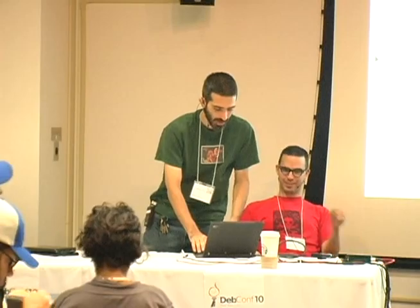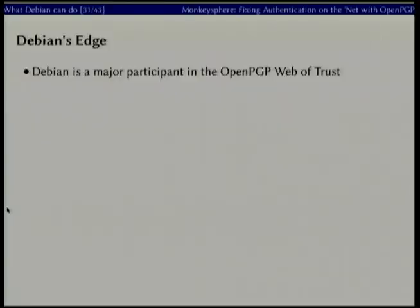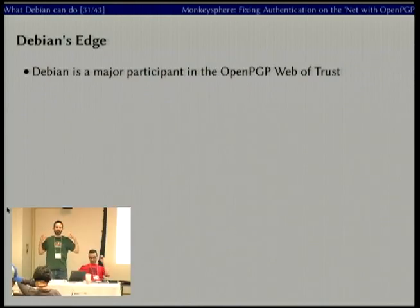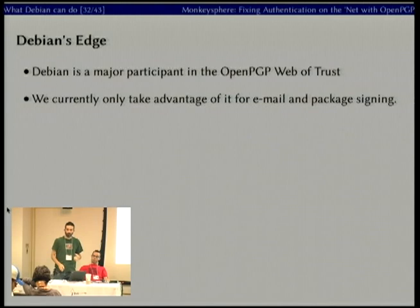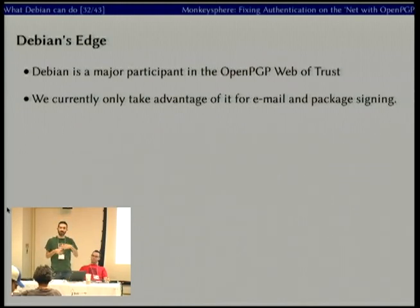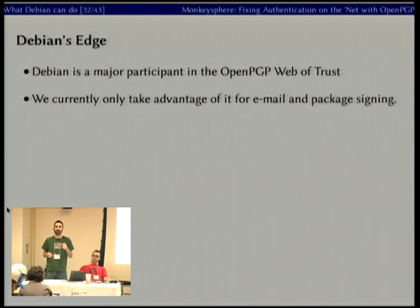I've got a couple of Debian-specific points. We're Debian — one of the largest participants in the OpenPGP web of trust. We've got the infrastructure already among us to take advantage of this. We currently use it for email — we sign many of our flame wars — and for package signing and distribution. These are critical pieces of our infrastructure. If those pieces didn't work, Debian would be fundamentally insecure. So we're already reliant on OpenPGP and we've got a big network — we can do a lot more.